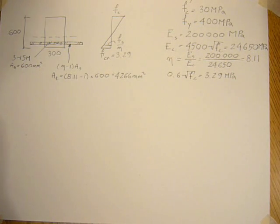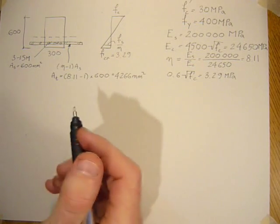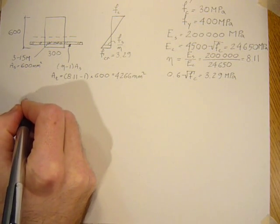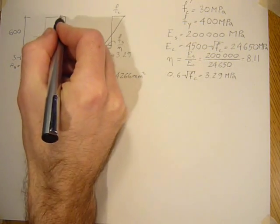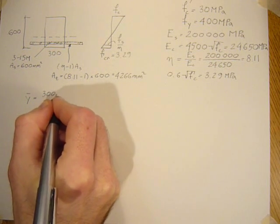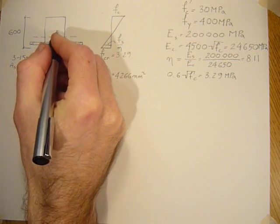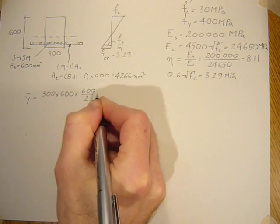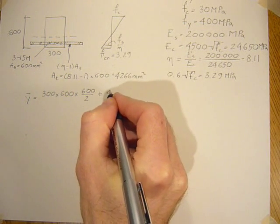So to find neutral axis we just take Y bar areas over area and solve for the Y bar. So Y bar is equal to this area of concrete, 300 times 600 times 600 over 2, plus the transformed area of steel which is 4,266, that's the area, times its distance from its centroid to the bottom fibers.